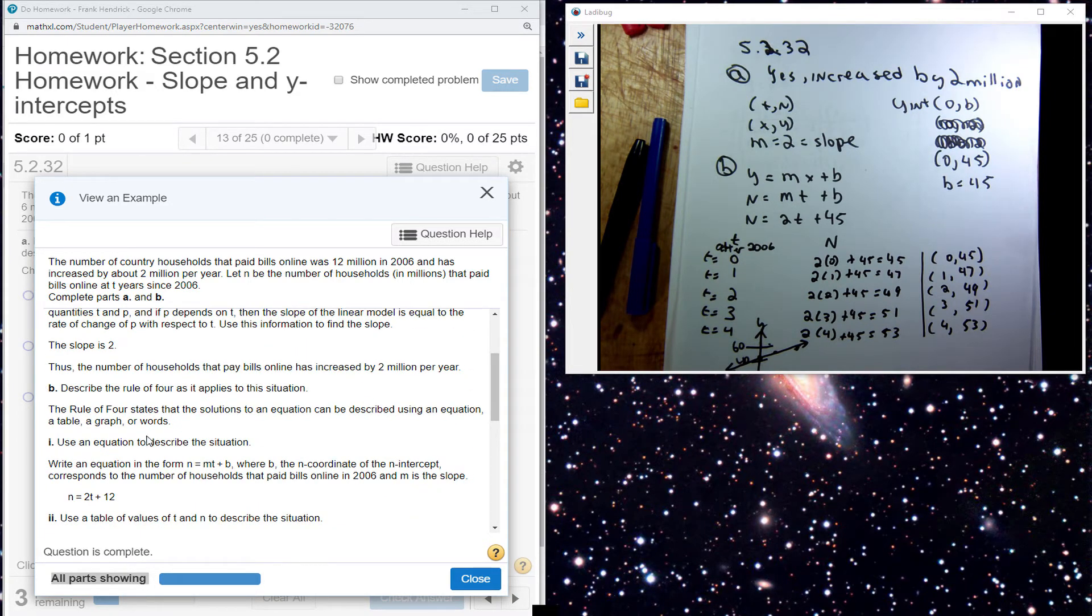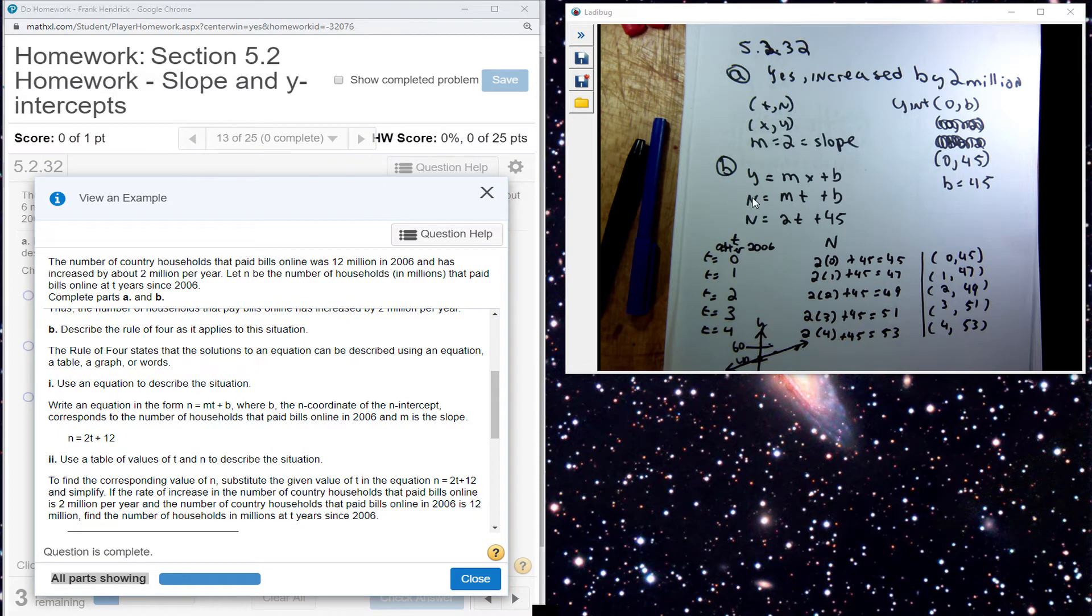The rule of 4 states that solutions to an equation can be described as an equation, as a table, or a graph. You can find an equation for it. We are given the slope and we are given the Y intercept of 45.